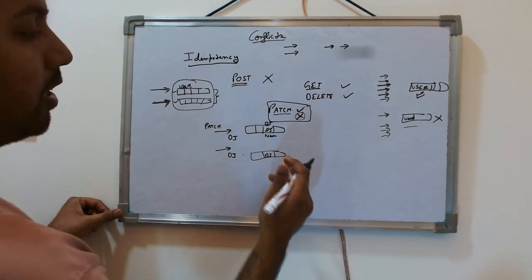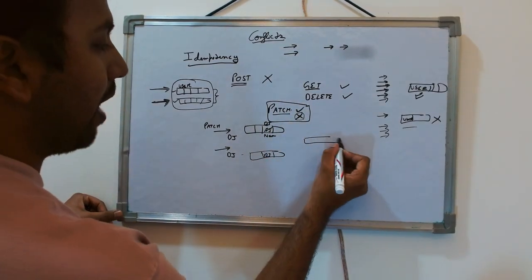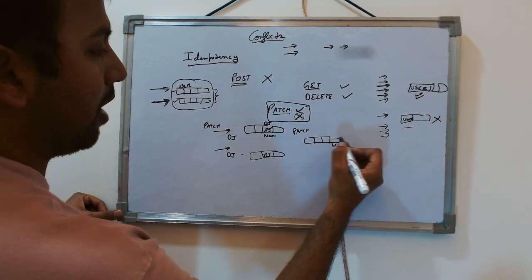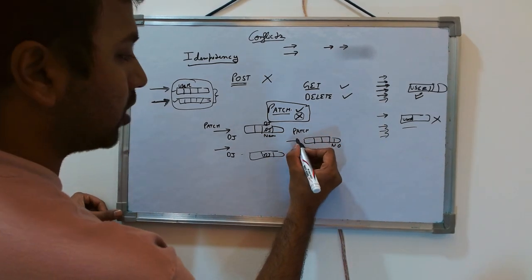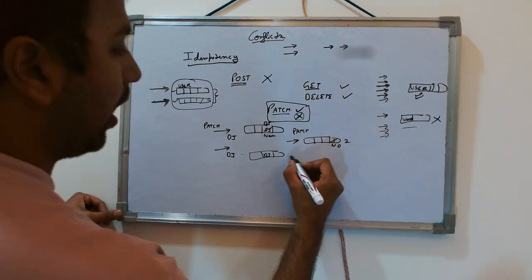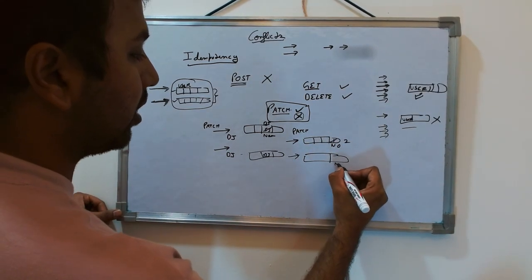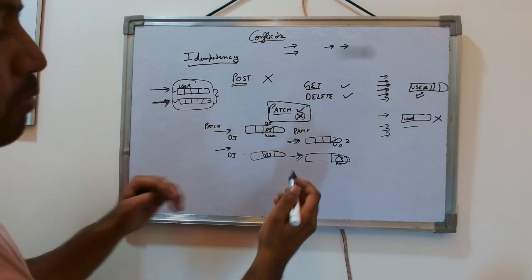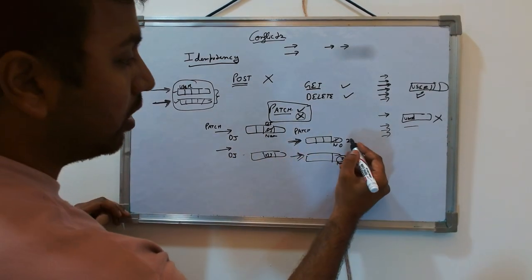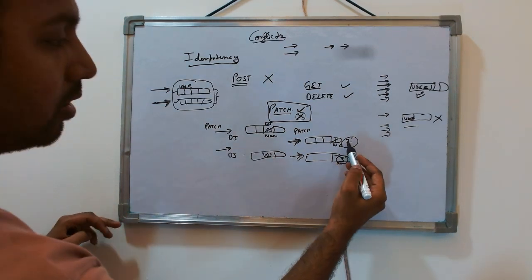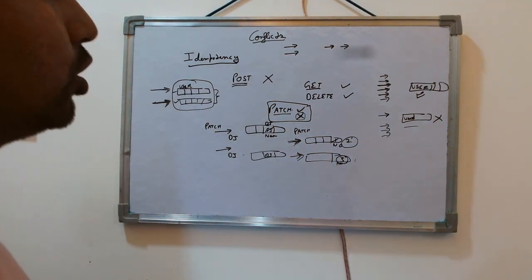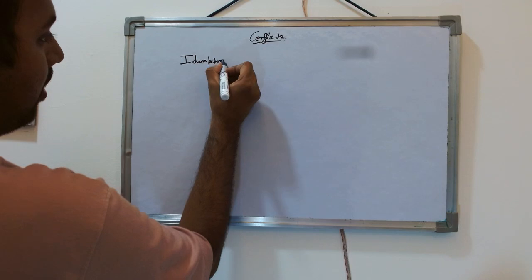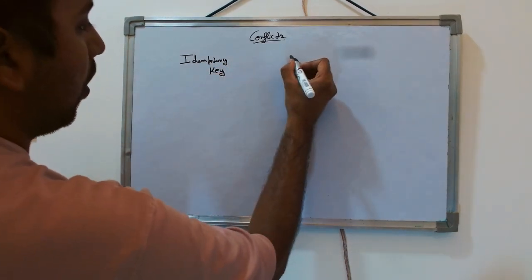There are cases where PATCH is not idempotent and needs to be handled properly. For example, if you have a row with a number and each PATCH call increments it — say it starts at 1, the first request increments it to 2, another call increments it by 1 again to 3. Here, even similar requests coming multiple times, whether concurrently or sequentially, change the state, so it is not idempotent.